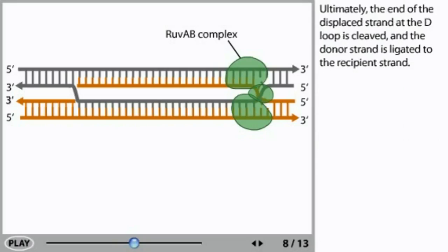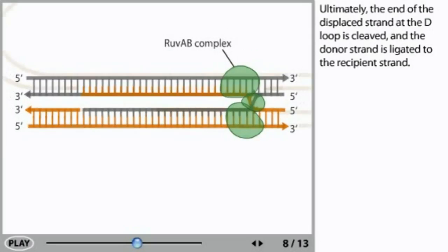Ultimately, the end of the displaced strand at the D-loop is cleaved and the donor strand is ligated to the recipient strand.